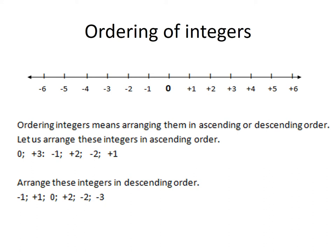Ascending order means starting from the smallest to the biggest. So if you look at your number line, the numbers on your left are smaller than numbers on your right. Looking at 0, positive 3, negative 1, positive 1, and negative 2 — our smallest one is negative 2, then negative 1, then 0, then positive 1, positive 2, positive 3. That is our ascending order.